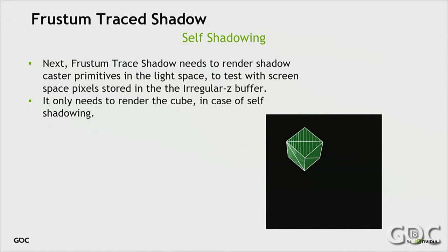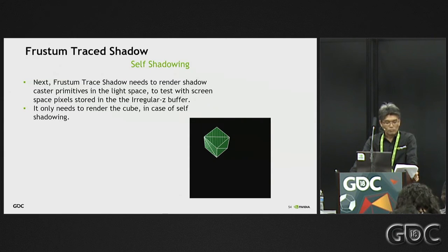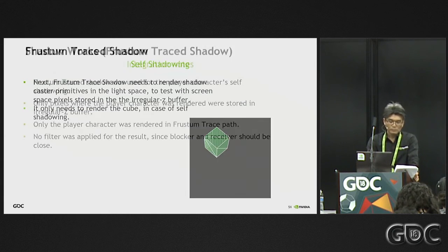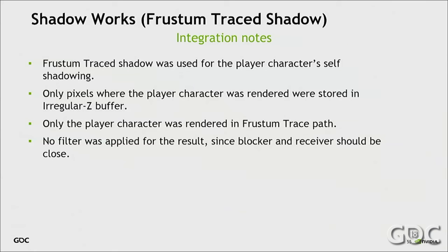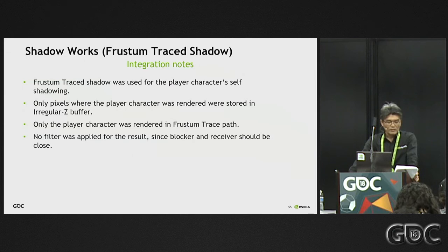In order to cast shadows, this technique needs to render objects in light space. When thinking about self-shadowing, we only need to render the player character in the path — which is what we did in Final Fantasy XV. This technique can be used for various game titles as an additive feature. If you can narrow down shadow casters and receivers, the ray-traced shadow will not consume many GPU cycles. And when limiting to self-shadowing, crisp shadows can be used without any filtering.